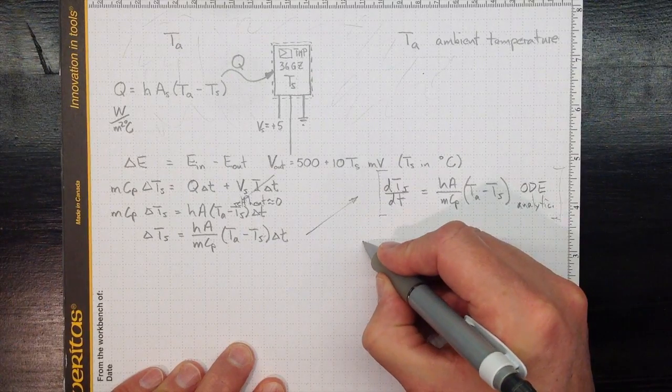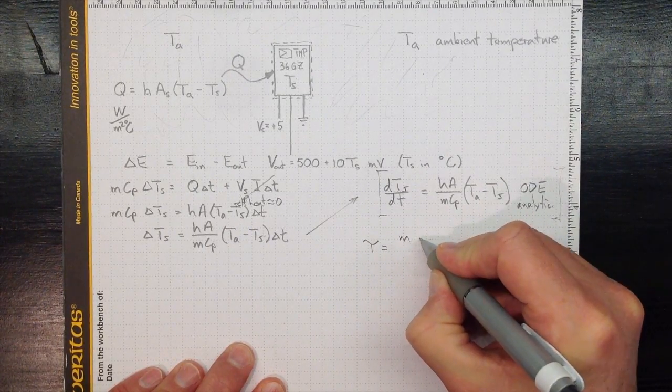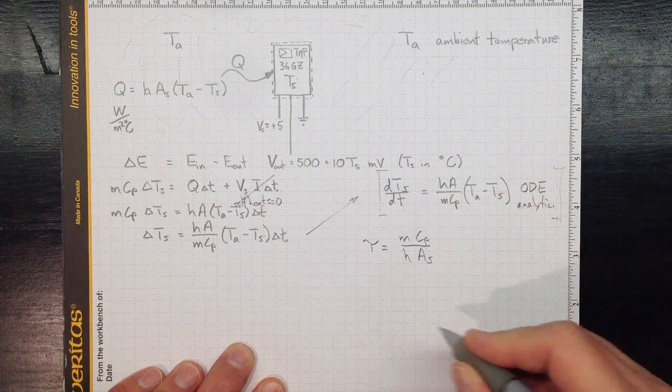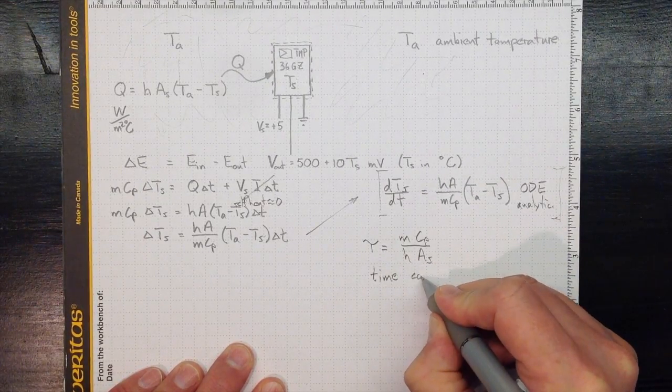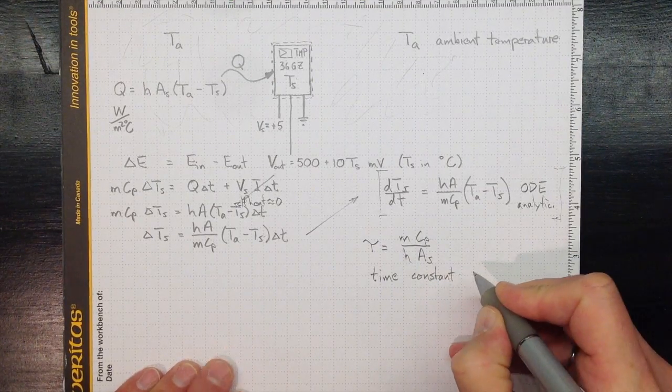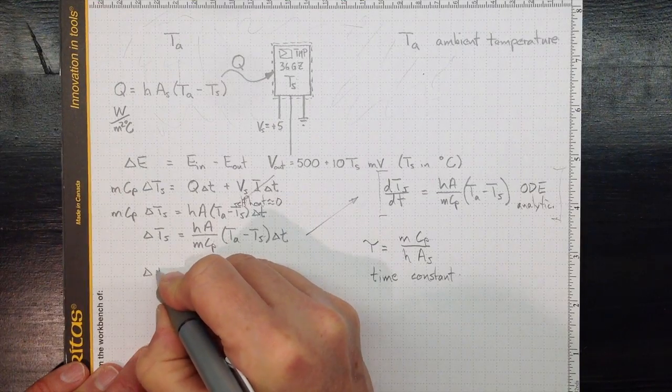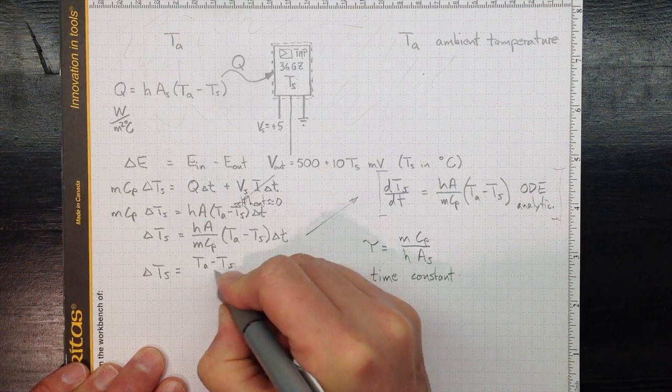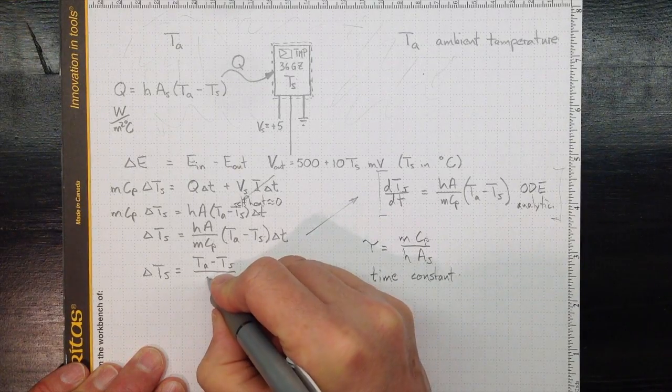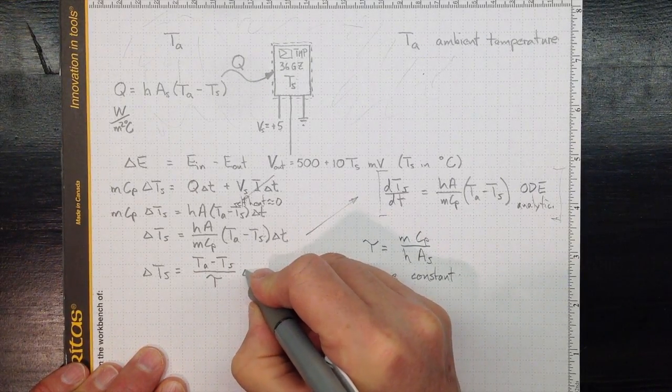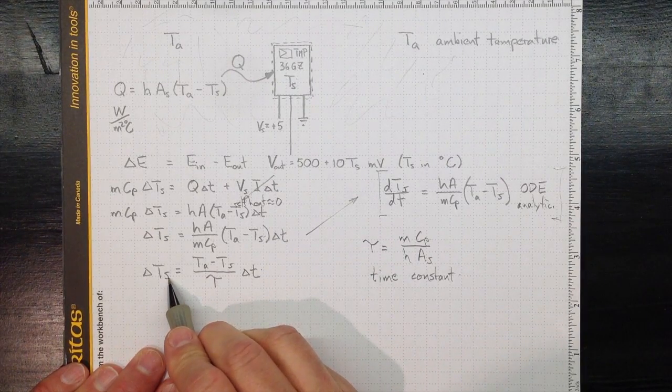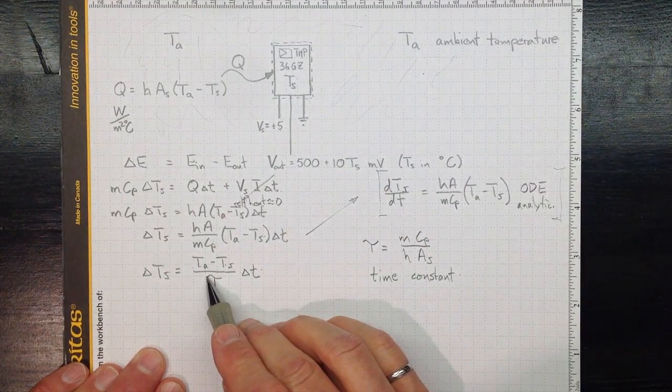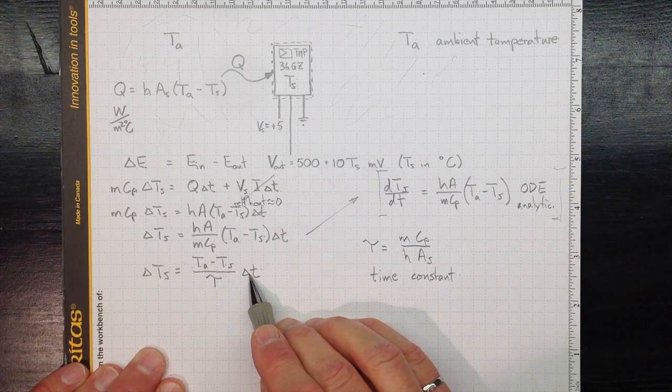Or, if we define tau as equal to MCP over H times AS, and call that a time constant, then we can rewrite this as delta TS equal to TA minus TS divided by that time constant tau times delta T. So the rate at which the temperature is going to change depends on how different the sensor is from the ambient, the time constant tau, and how long we watch for.